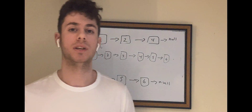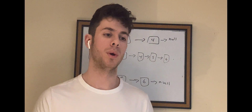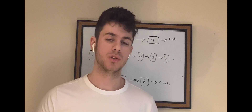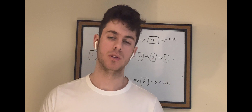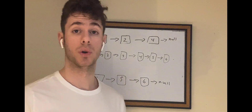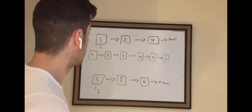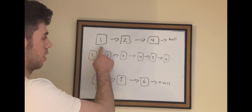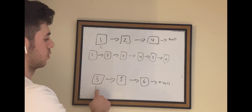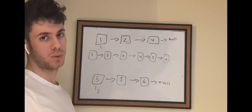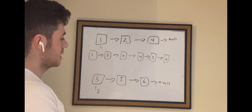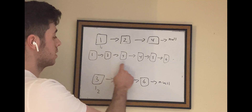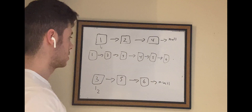Welcome to today's video. We're going to be going over a pretty easy leetcode problem, and that's merging two sorted linked lists into one merged sorted linked list. So let's say you're given L1 and L2 — essentially the starting node of each linked list. You're given two linked lists and you're asked to merge these two sorted linked lists into one sorted merged linked list.